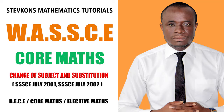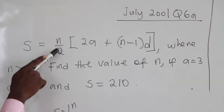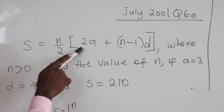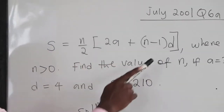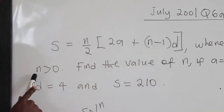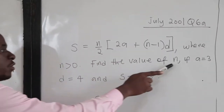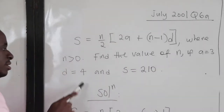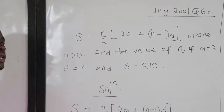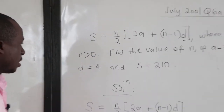This is July 2001, question 6a. We have been given S equal to n over 2 into 2a plus n minus 1 times d, where n is greater than 0. We should find the value of n if a is 3, d is 4, and S is 210.